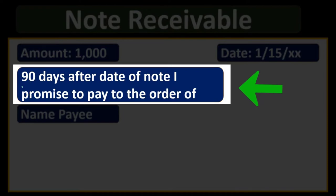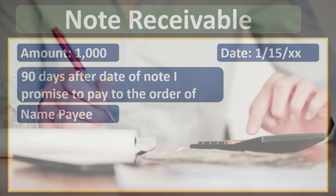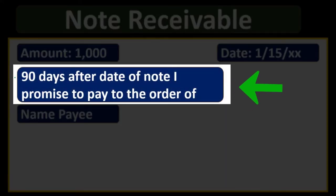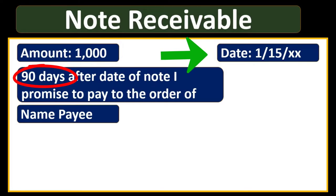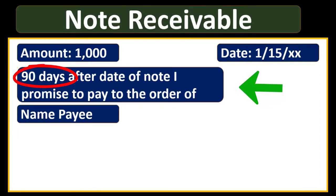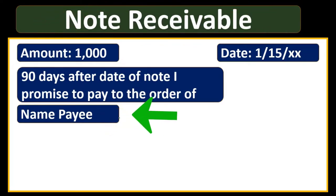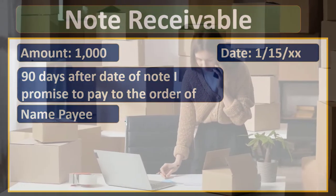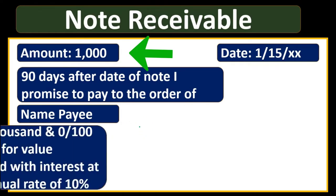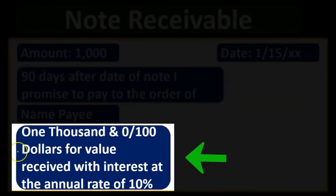Note that the due date isn't just a calendar date; the note is often written as '90 days from the date of the note,' which makes it easy to use a template. We're typically dealing with shorter-term notes here, meaning less than a year. The payee, as you can see from the wording of the note, is who is being promised payment — that's us, the business — who will get paid the principal amount plus interest at the end of the time period.